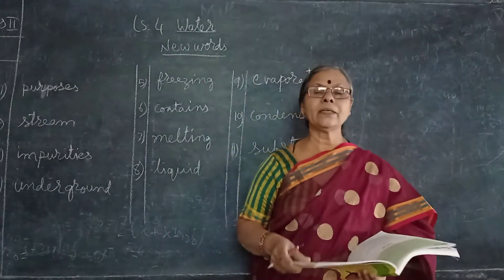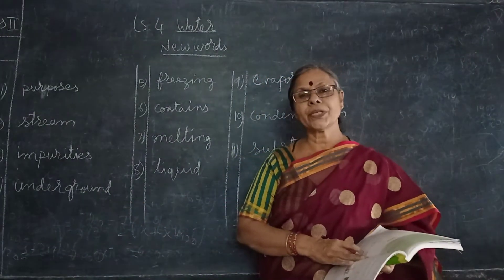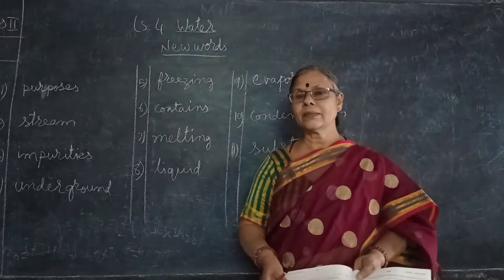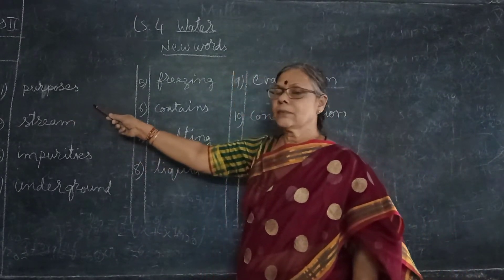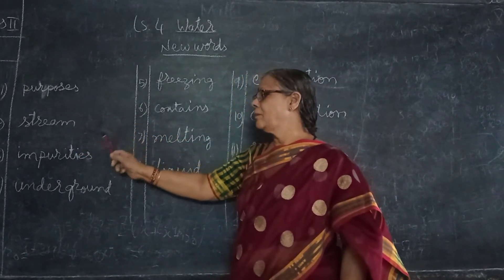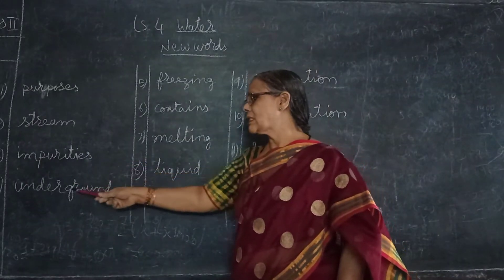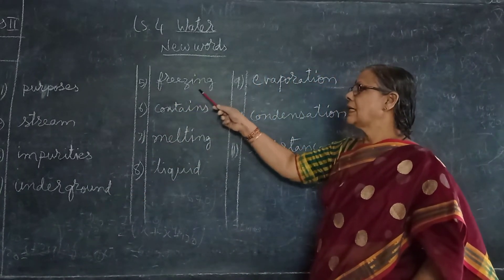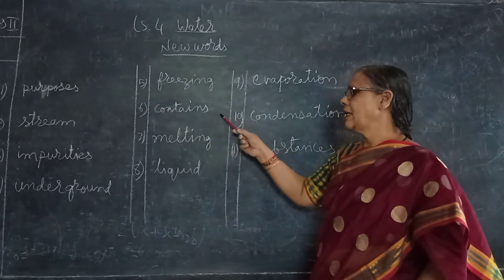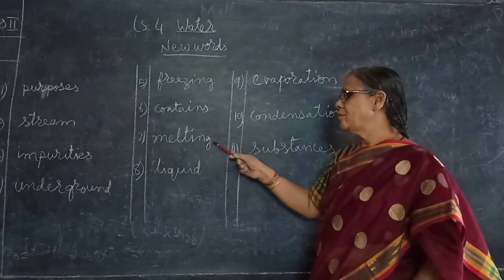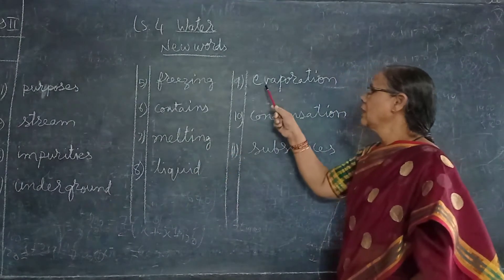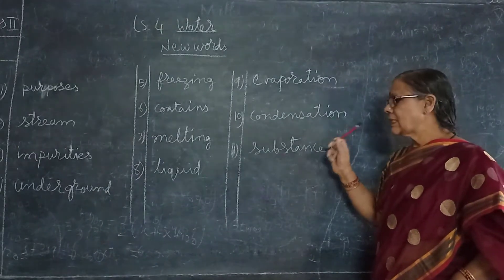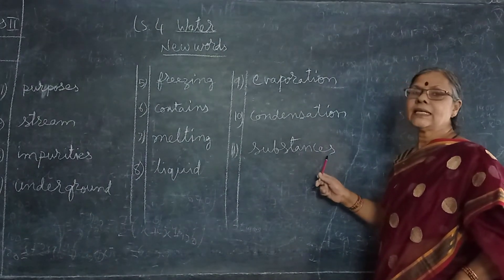With this we have completed writing the new words and object type also. Once again I will read the new words — you also read along with me: purposes, stream, impurities, underground, freezing, contains, melting, liquid, evaporation, condensation, substances.